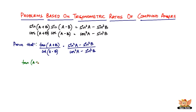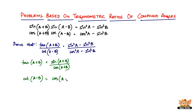Tan(a+b) can be written as sine by cos, so it's sine(a+b) divided by cos(a+b). And similarly, cot(a-b) can be written as cos(a-b) divided by sine(a-b). Now that we've got this, let's see how we use these expressions to get the proof.